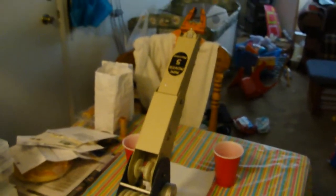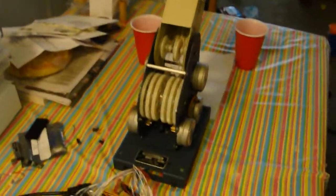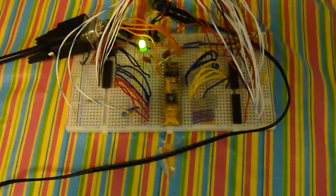This is the MiniMover 5 robotic arm demonstration. The controller used for this MiniMover 5 is the BS2P40 or a 40-pin basic stamp.